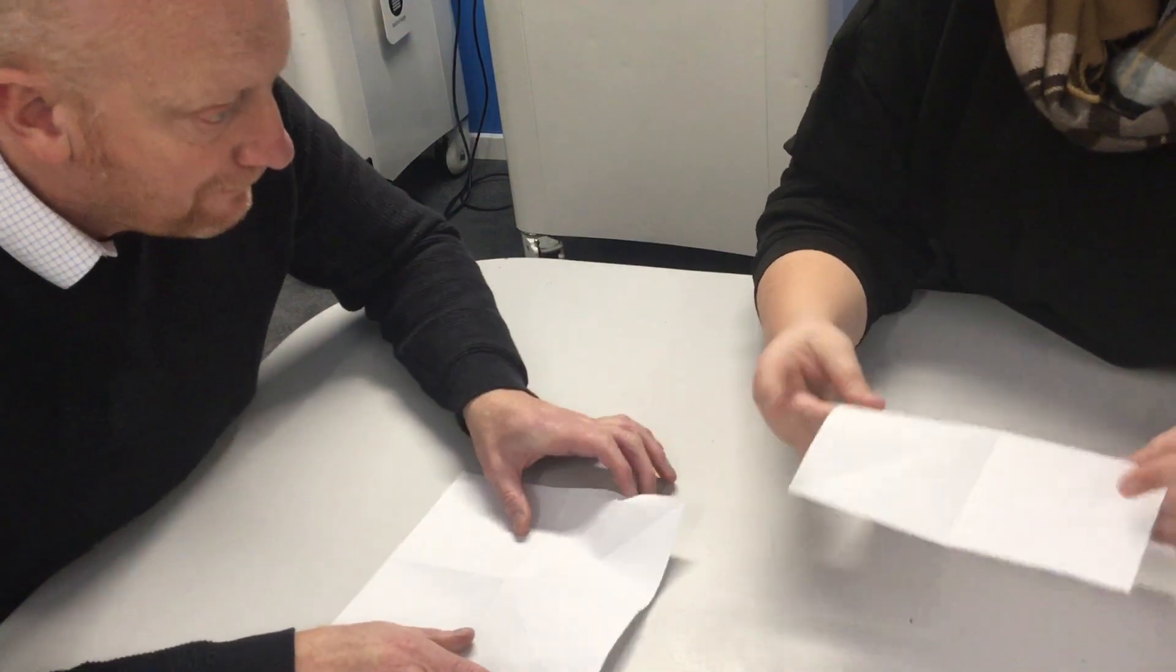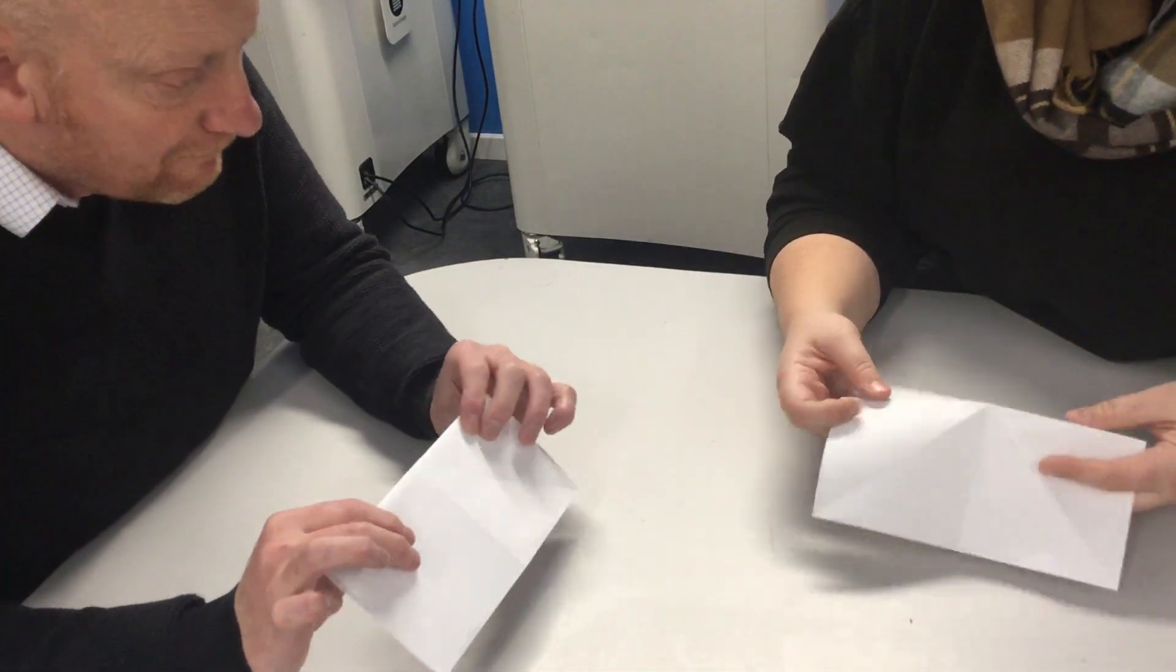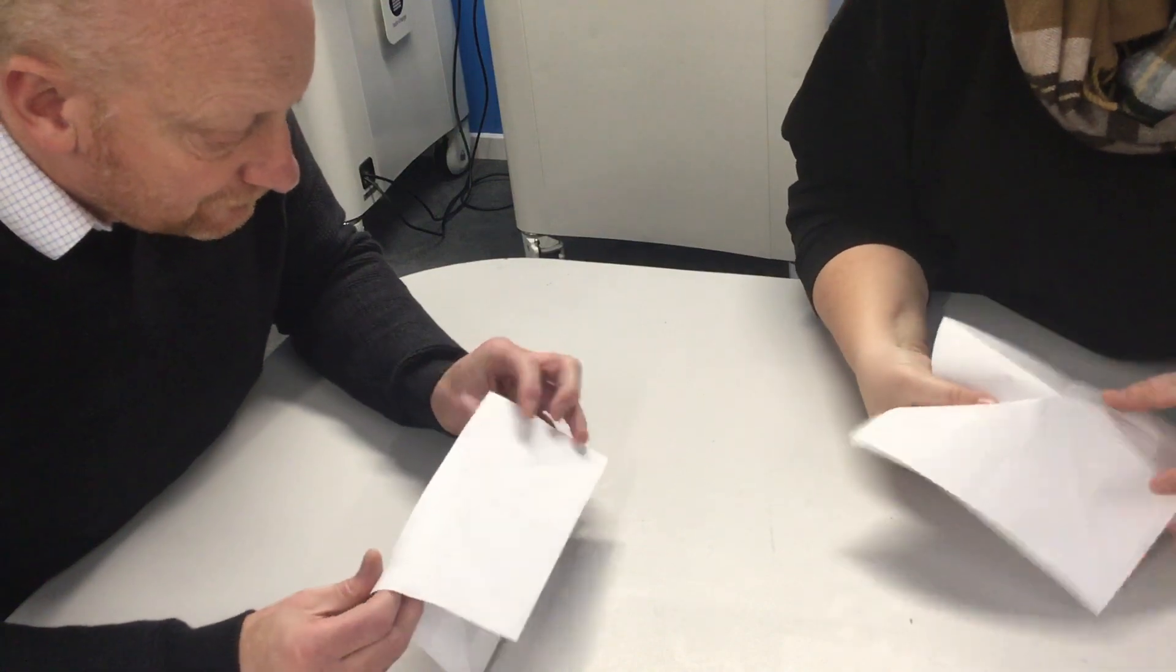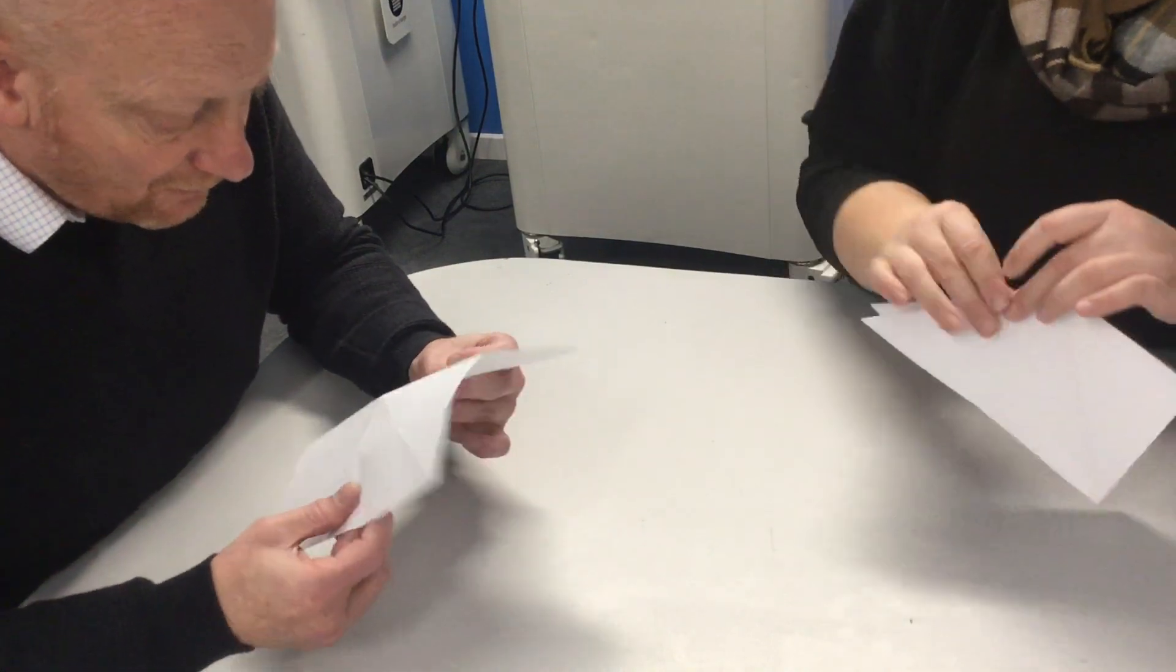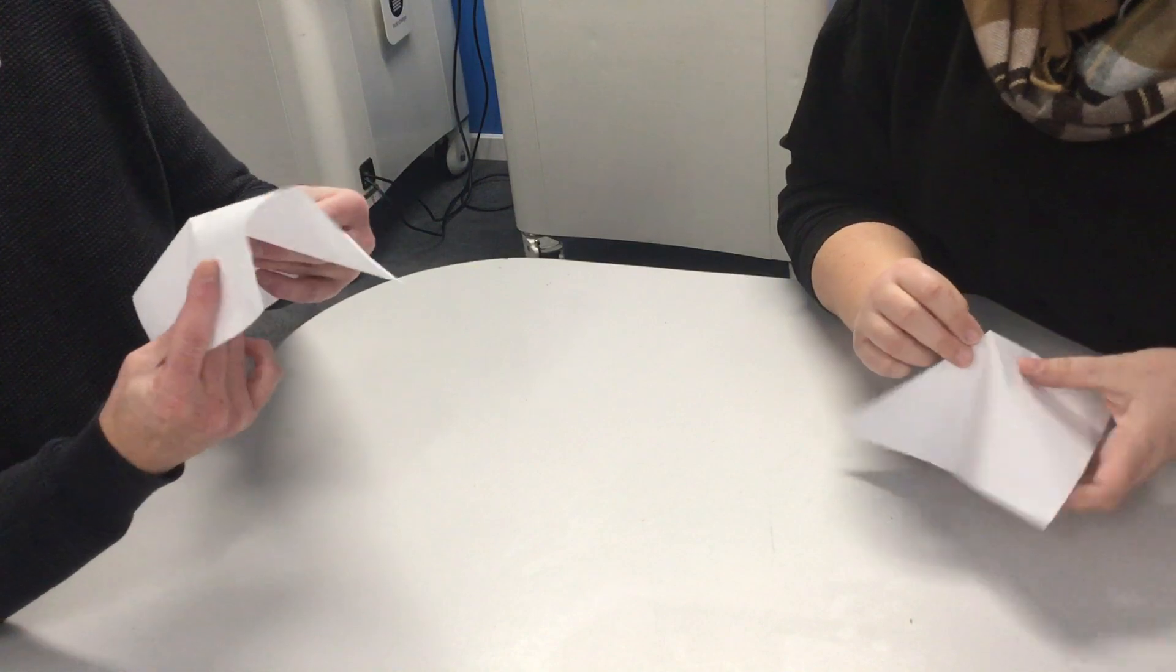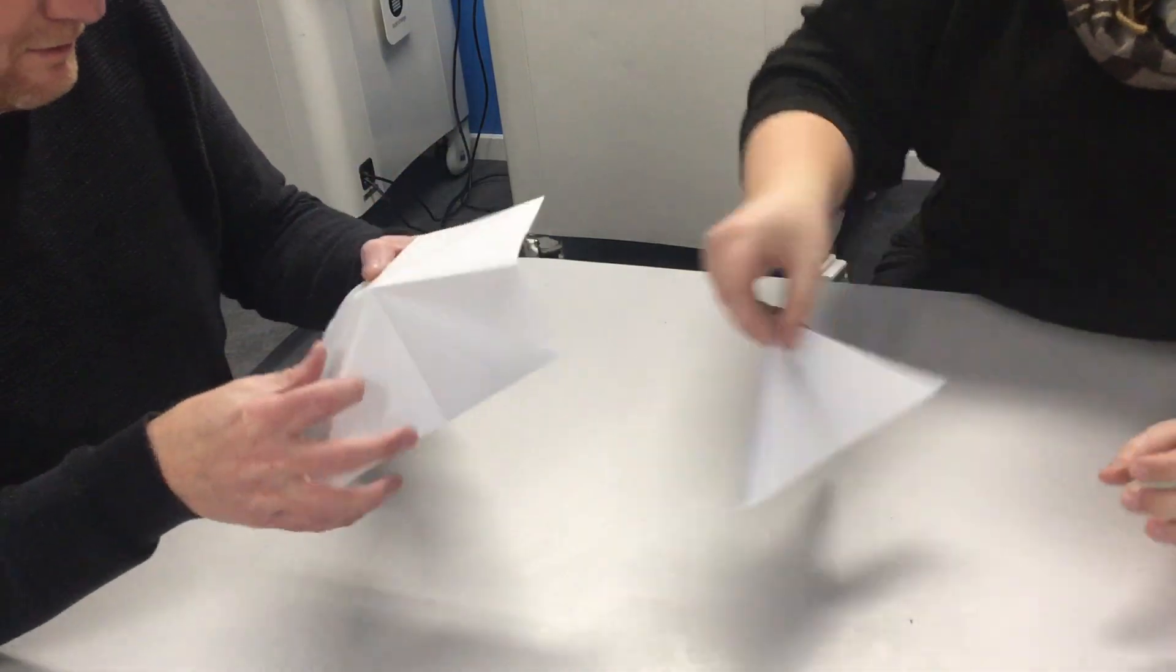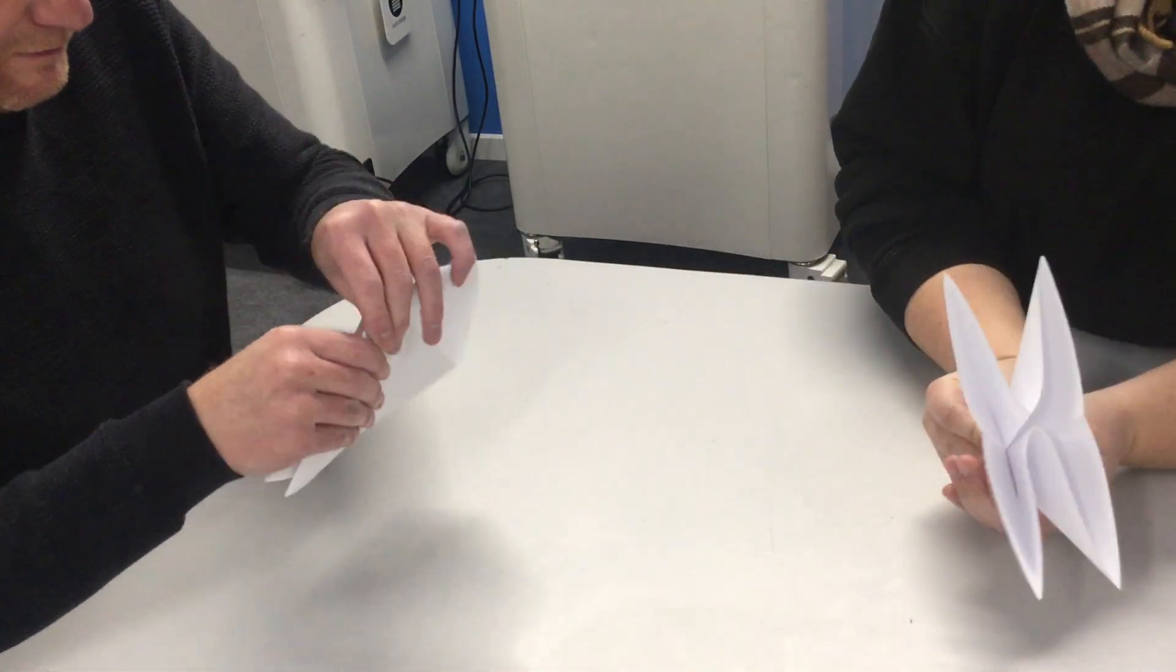So what we want to do is kind of have it where we can see that triangle and then we're going to fold the inside in on both sides so that we get that triangle visible on both sides and it makes that shape at the bottom.